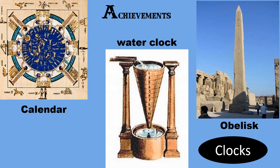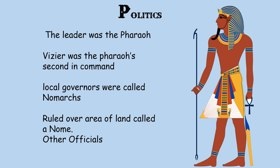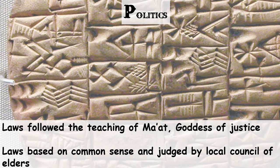Moving on to politics, which refers to anything to do with government — who leads the country, how laws are made, the judicial system. The leader or king in Egypt was the Pharaoh, who had ultimate and absolute power over Egypt. He had a right-hand man he chose called a vizier, who was second in command and helped the Pharaoh run Egypt. Egypt was then divided into separate areas called nomes, and each nome was ruled over by a local governor called a nomarch.